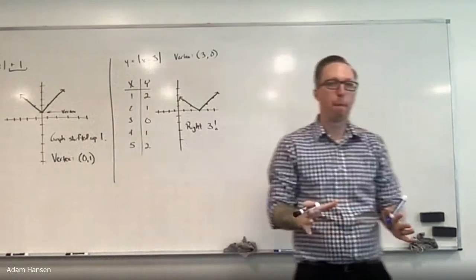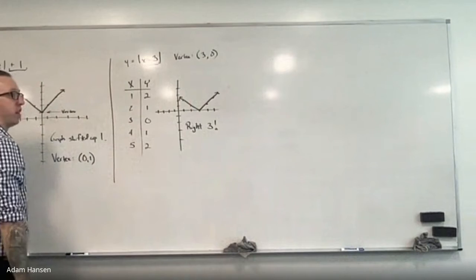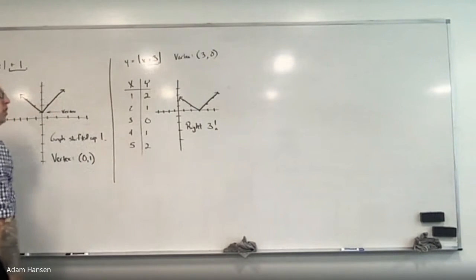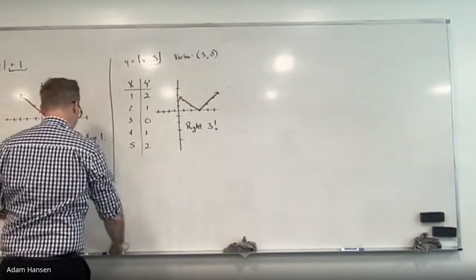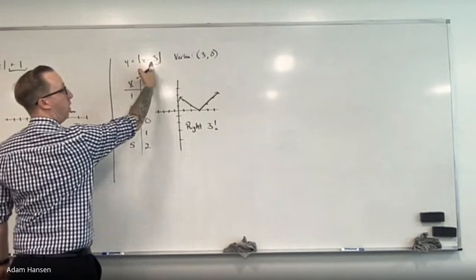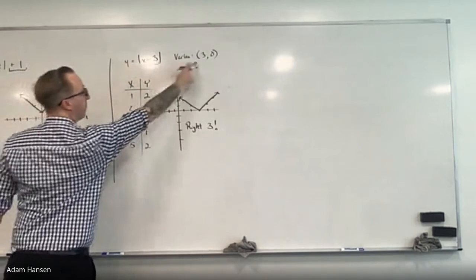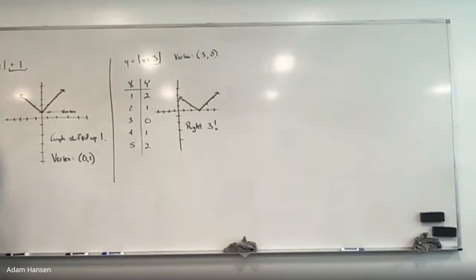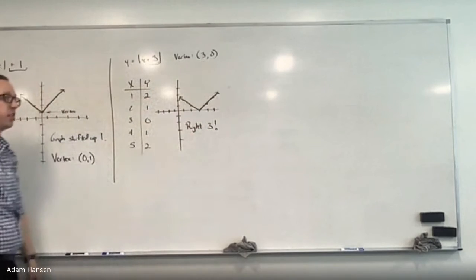What do you think would happen if I make it x plus instead of x minus? How did we get three here? The vertex means minimum — the smallest absolute value is zero. What number minus three makes zero? Three. Now let's change it to x plus. What number plus three makes zero? Negative six. So changing the sign changes the direction of the horizontal shift — not right three, but you change the sign, you change the direction.